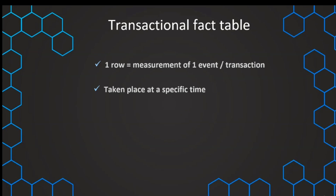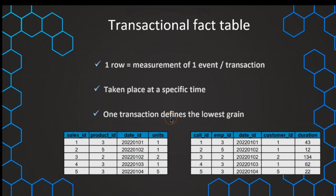This is something that is happening — an event or a transaction, for example a sales transaction. And this transaction is basically the definition of our grain. Our grain means we have one transaction that makes one row, and therefore one transaction defines the grain.